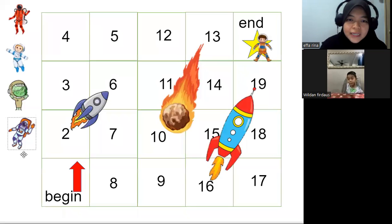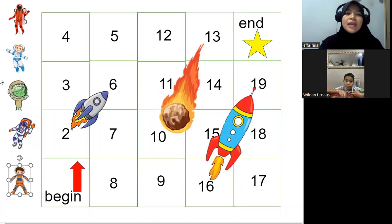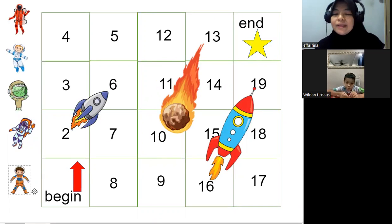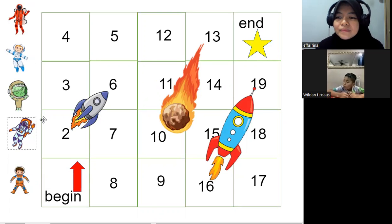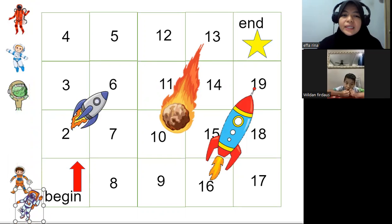Alright, come, let us play one game. This is called the rocket game. Okay, so we'll choose. Which one do you want? Which astronaut? What color? Purple? Purple, this one? Okay, okay.